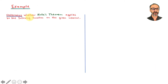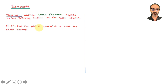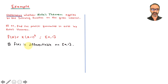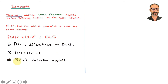Another example: determine whether Rolle's theorem applies to the following function on the given interval, and if so, find the point guaranteed to exist. The function is x·(x−1)², on the interval [0,1]. First, is it differentiable? Yes, it's a polynomial. Second, F(A)=F(0)=0 and F(B)=F(1)=0. Those are the conditions of Rolle's theorem, so Rolle's theorem applies.